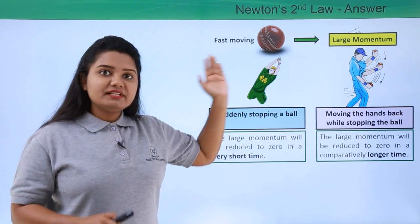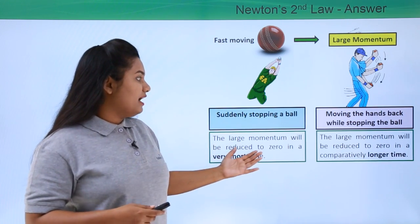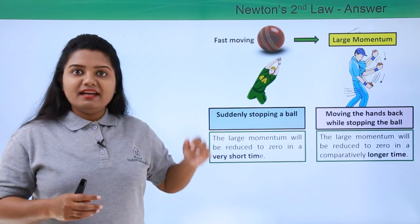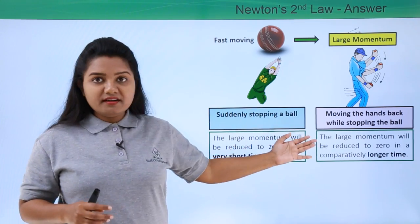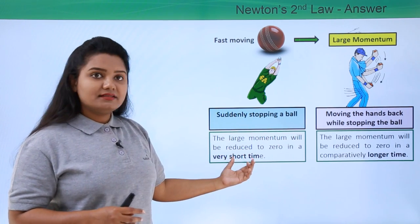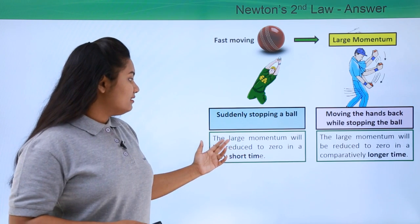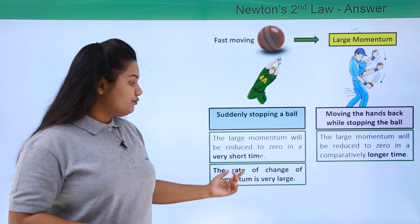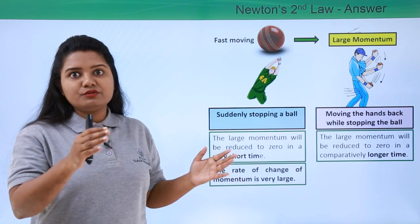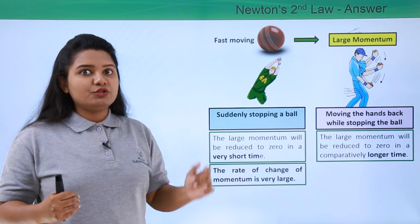But when the player moves his hands backwards, he takes more time, and that's why the large momentum is reduced to zero in a comparatively longer time. So the rate of change of momentum is very large in the sudden-stop case, because such a large momentum has to be reduced to zero in a very short period of time.